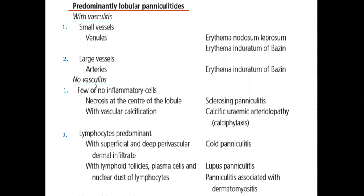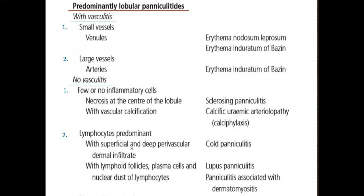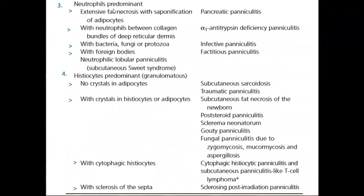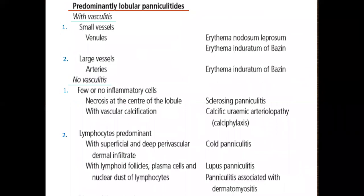Among the lobular paniculitis, there are two major classifications: those paniculitis associated with vasculitis, and those in which there is no vasculitis. In the category with no associated vasculitis, there are four different types: paniculitis with little inflammatory infiltrate, predominantly lymphocytic infiltrate, predominantly neutrophilic infiltrate, and predominantly histiocytic infiltrate.